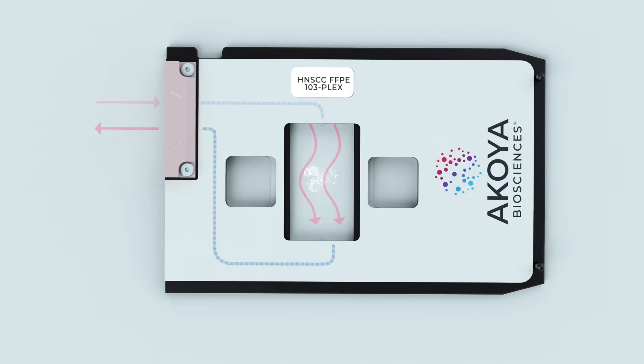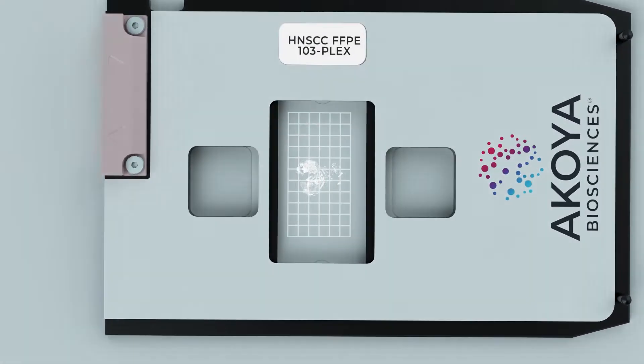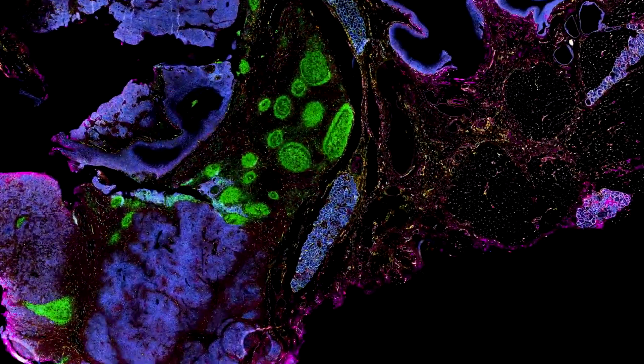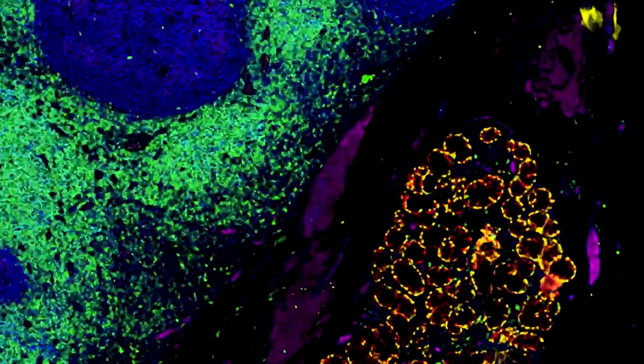So every single cell across an entire tissue section can be labeled for true, unbiased discovery and in-situ spatial phenotyping. While the PhenoCycler allows for automated ultra-high-plex staining.